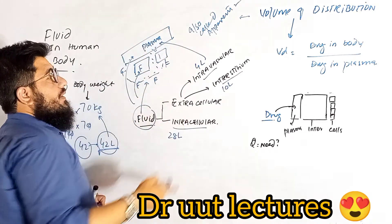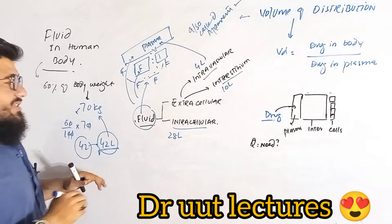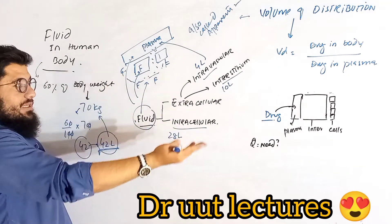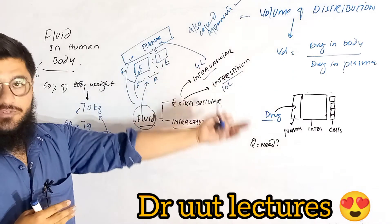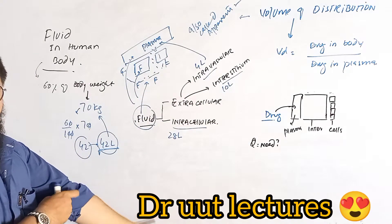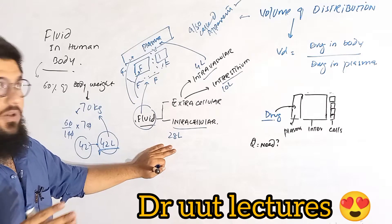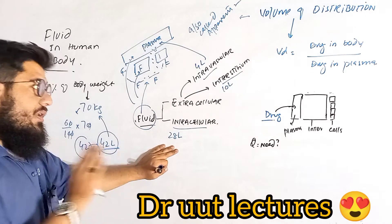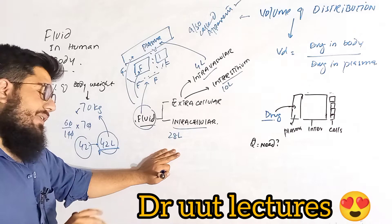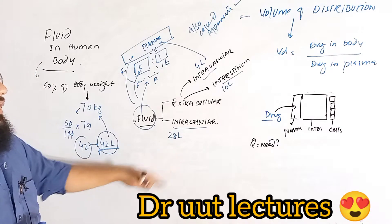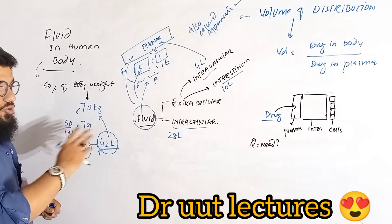The intravascular fluid — plasma — comprises 4 liters, or about 4% of body weight. 10% of body weight is interstitial fluid, and 40% of body weight is intracellular fluid — meaning inside the cell. You can express these values either as percentages or as liters.